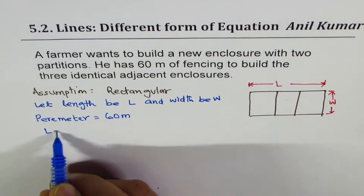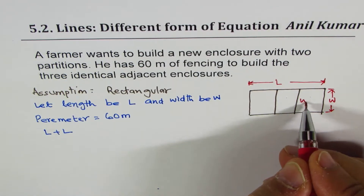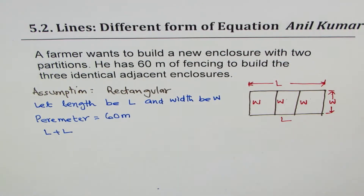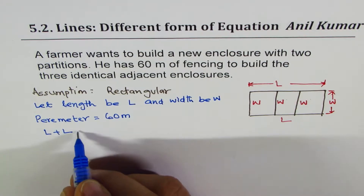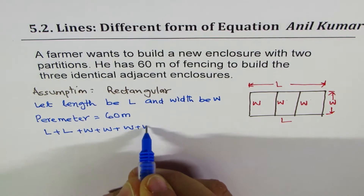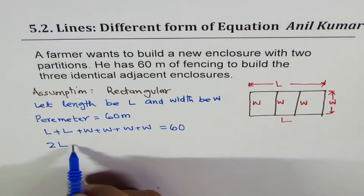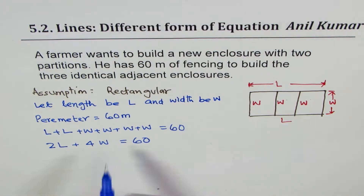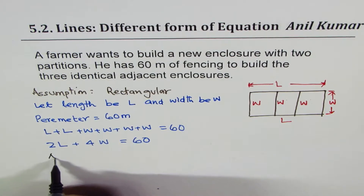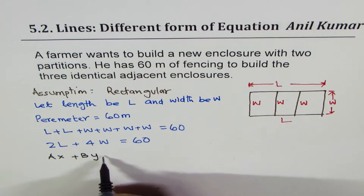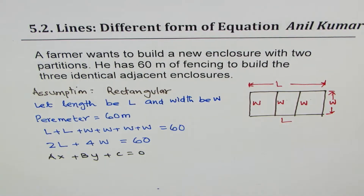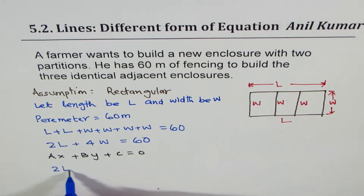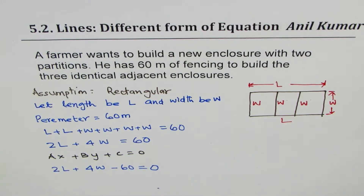There are two lengths, so L plus L, and for the widths we also include the two partition walls, giving four widths total. So we write 2L plus 4W equals 60. Rearranging, we get 2L plus 4W minus 60 equals zero, which is the standard form.